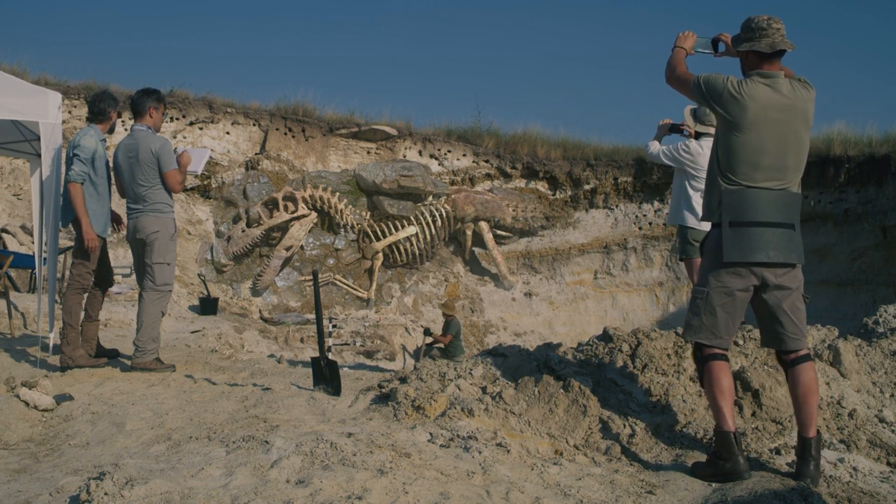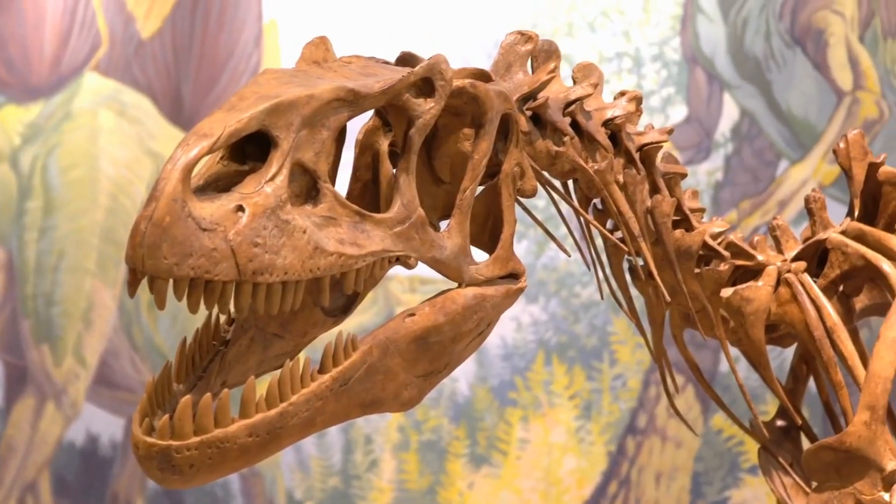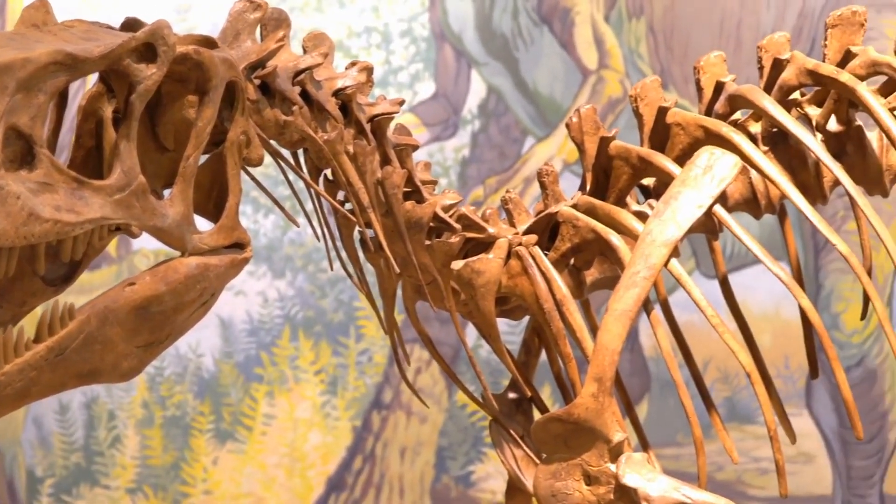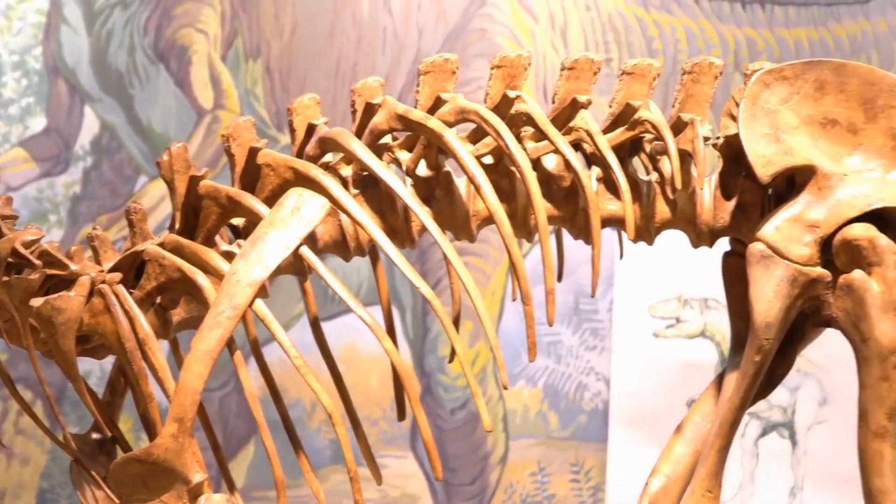A dinosaur that lived in China some 120-125 million years ago, revealed that the prehistoric creature had reddish-brown tones and stripes along its tail.